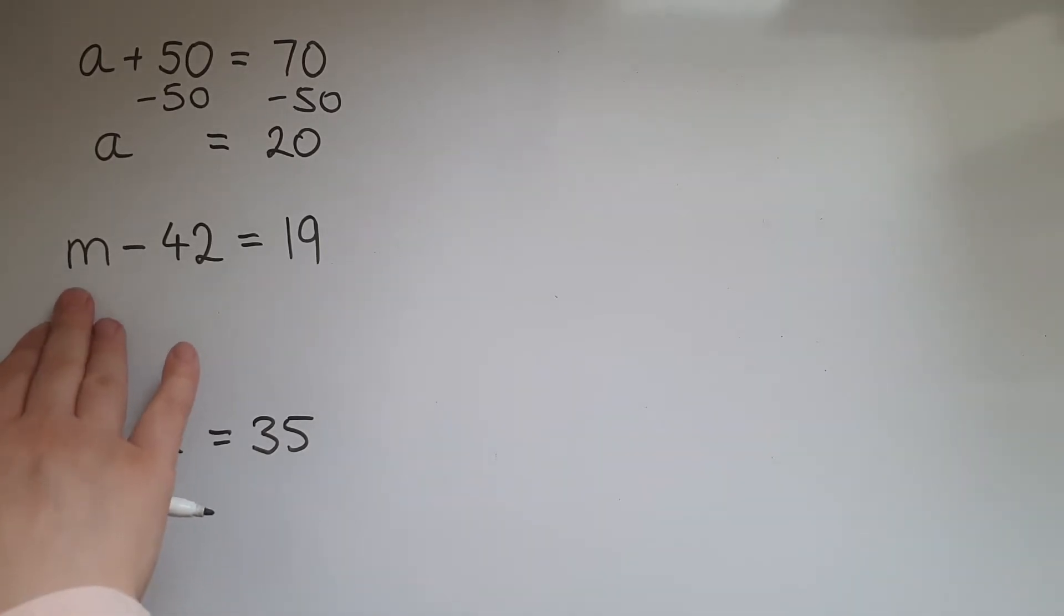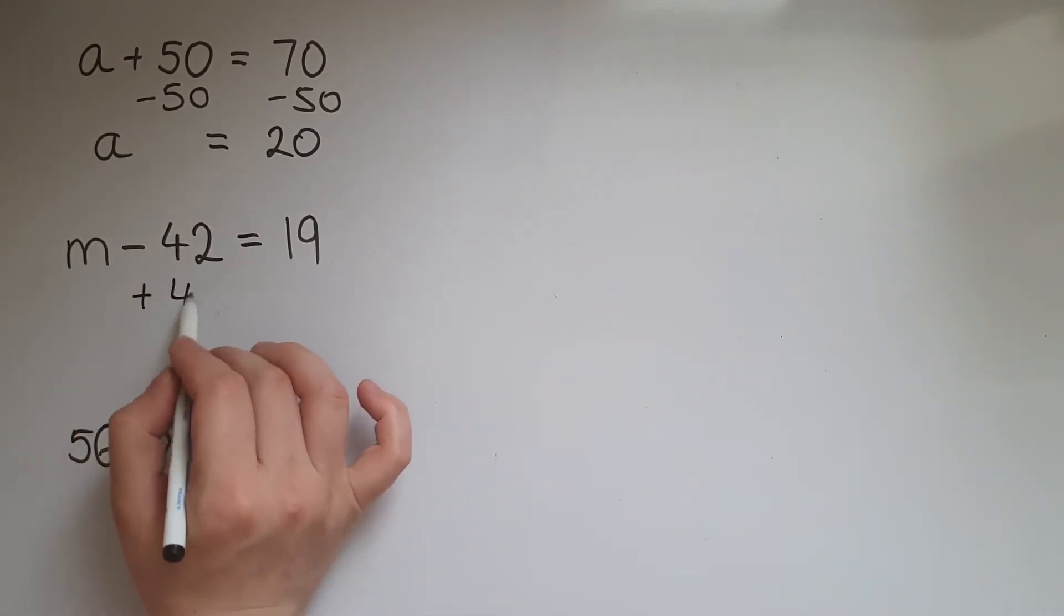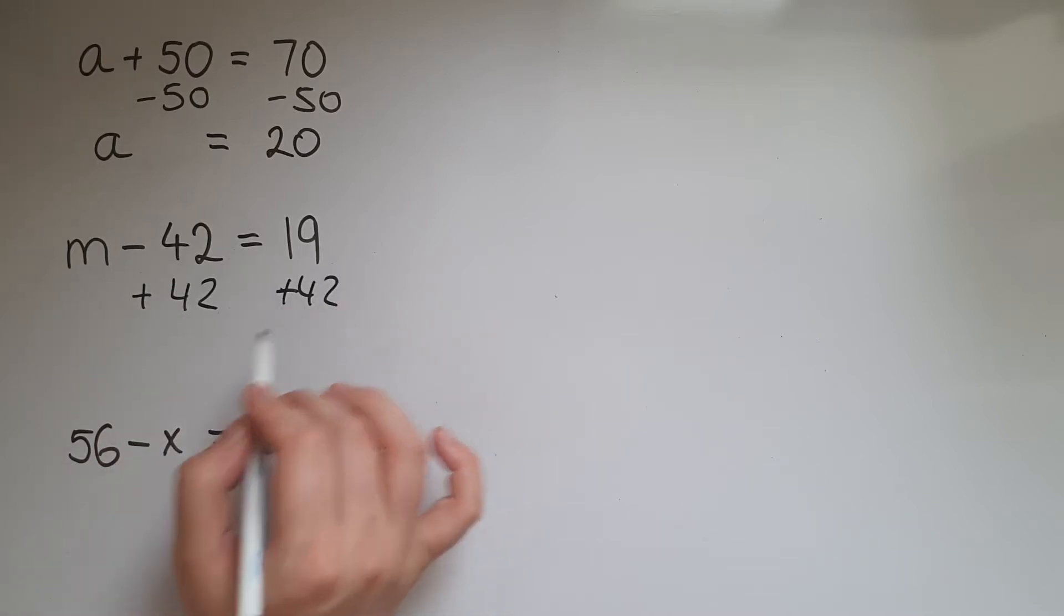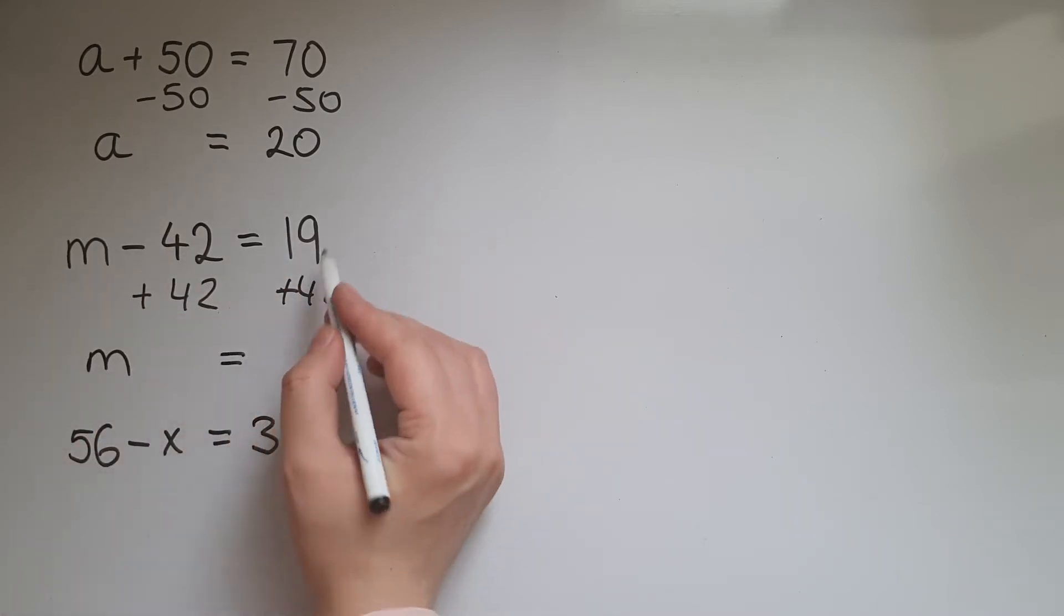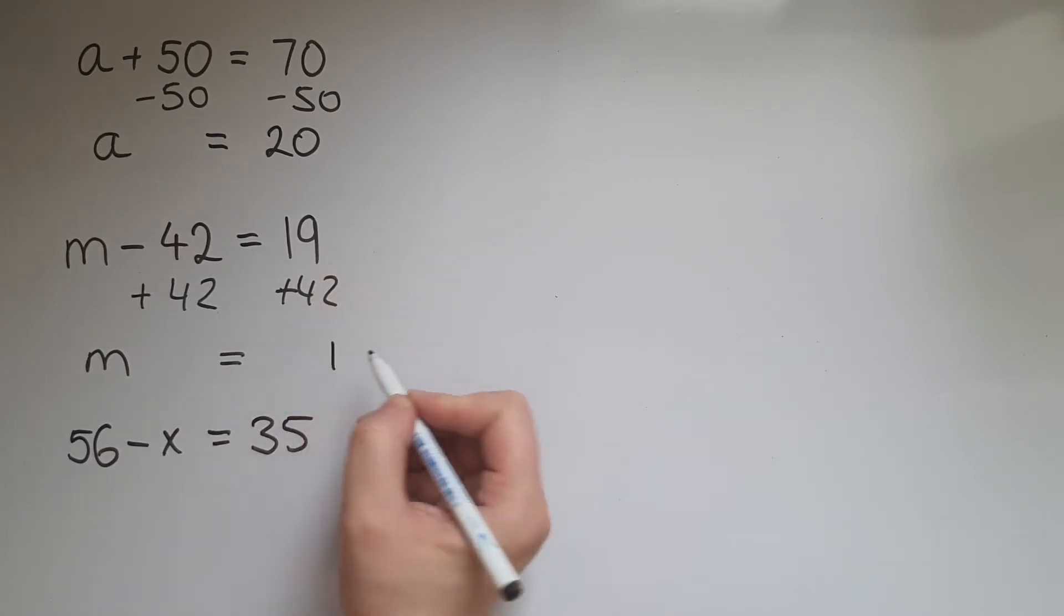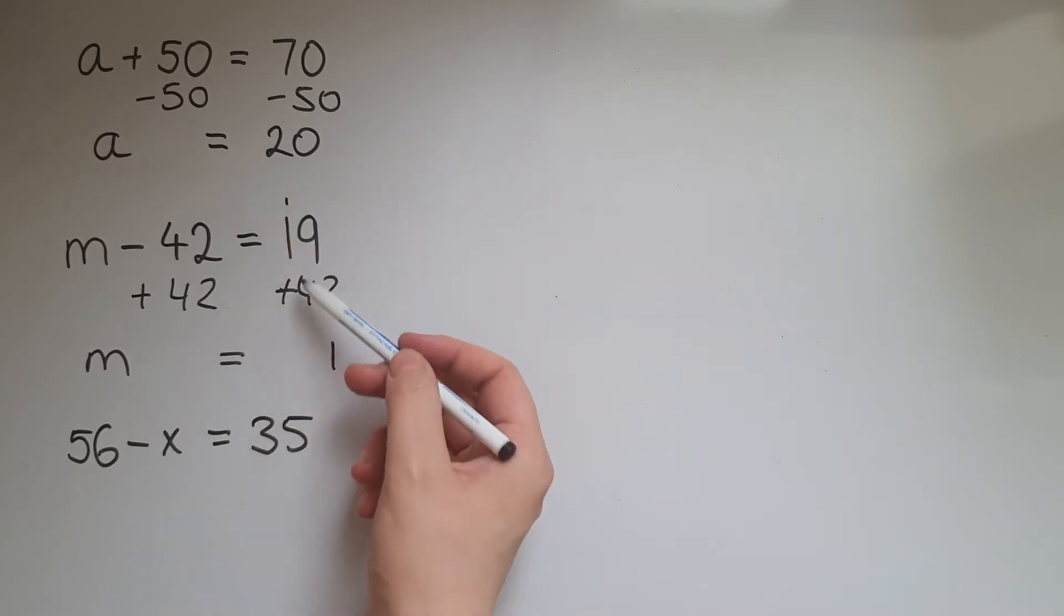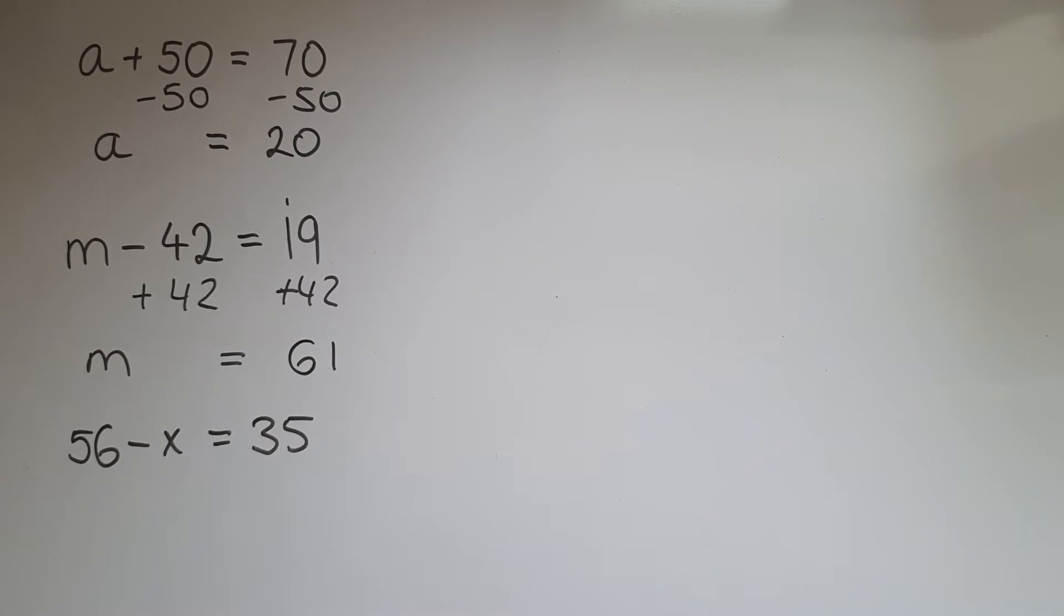So what was the amount of money that I had before I went into the shop? So again I want to just have m on one side and work out the value. So I'm going to get rid of this taking away 42. To undo that I'm going to add 42 on both sides. So m take away 42 add 42 leaves me with just m. 19 add 42, so 9 and 2 is 11 and one carried over, 4 and 1 is 5 and the 1 is 6, so 61. So the amount that I entered the shop with is 61 pounds.